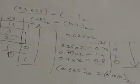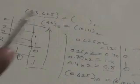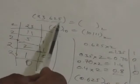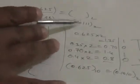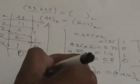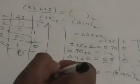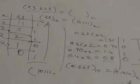Now we have to convert the full number 23.625 into binary. We combine the two binary numbers: the binary equivalent of the integer part and the binary equivalent of the fractional part. So we write the integer part 10111, then the binary point, then the fractional part 1010. The result is 10111.1010.